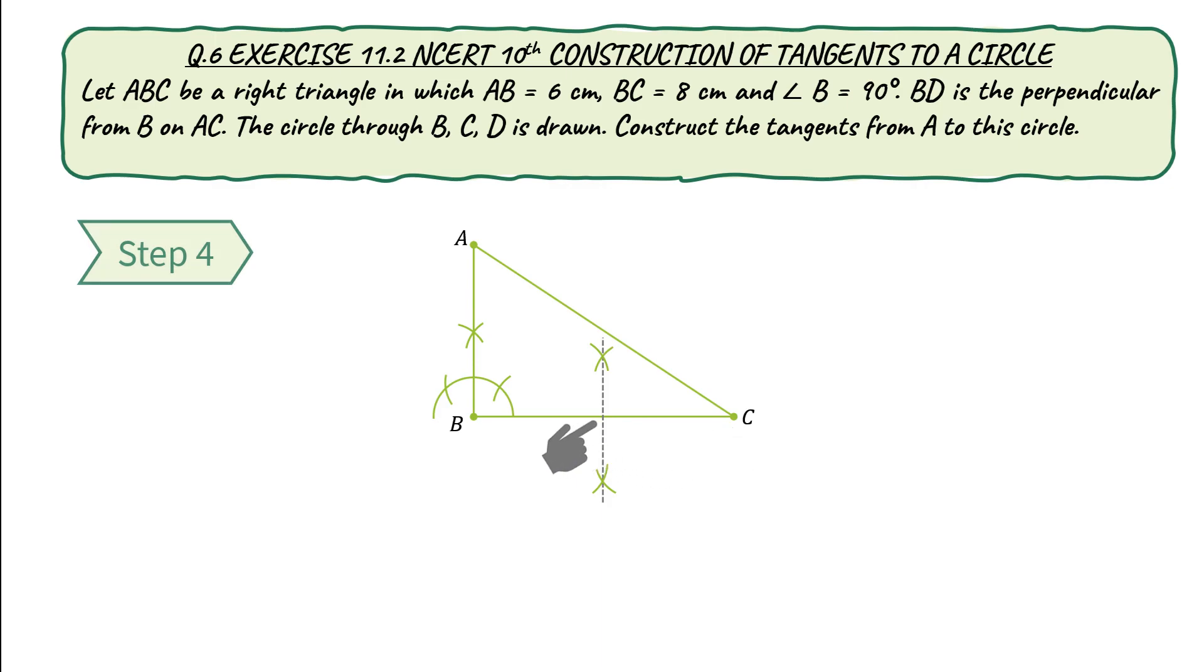Let M be the midpoint of line segment BC. Step 5. Taking M as center and BM as radius, draw a circle. Let D be the intersection point of circle and side AC of right triangle ABC.